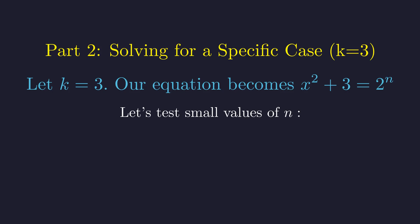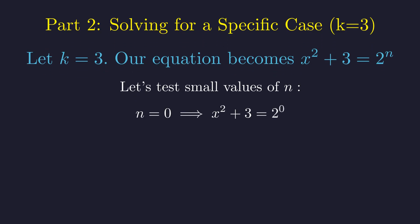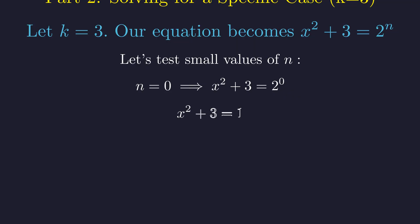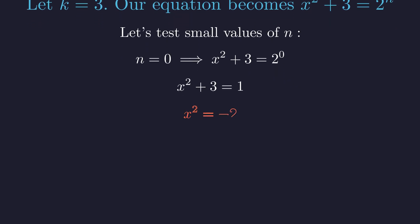Let's check the first few values of n and see what we find. If n is 0, the equation is x squared plus 3 equals 2 to the 0th power. 2 to the 0th power is 1. Subtracting 3 gives x squared equals negative 2. There's no real solution.